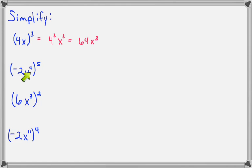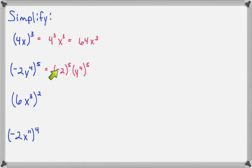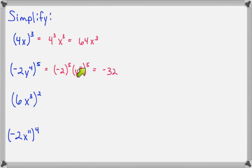Negative 2y to the fourth raised to the fifth means we will raise each factor to the fifth power, giving us negative 2 to the fifth times y to the fourth to the fifth. Five negative signs will make a negative answer. 2 to the fifth is 2 times 2 times 2 times 2 times 2: that gives us 4, then 8, then 16, then 32. And y to the fourth raised to the fifth — we recognize this as a power rule setup — so this is y to the twentieth.